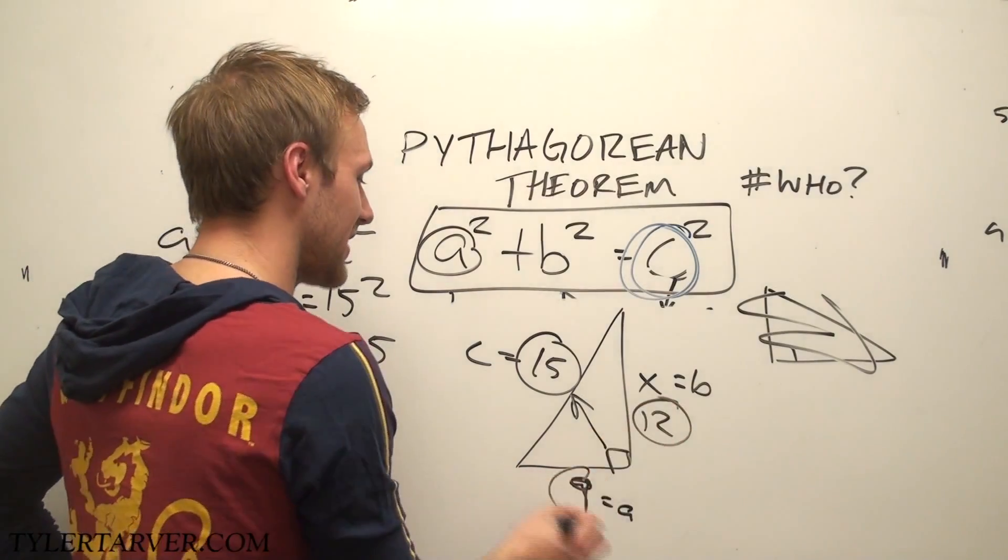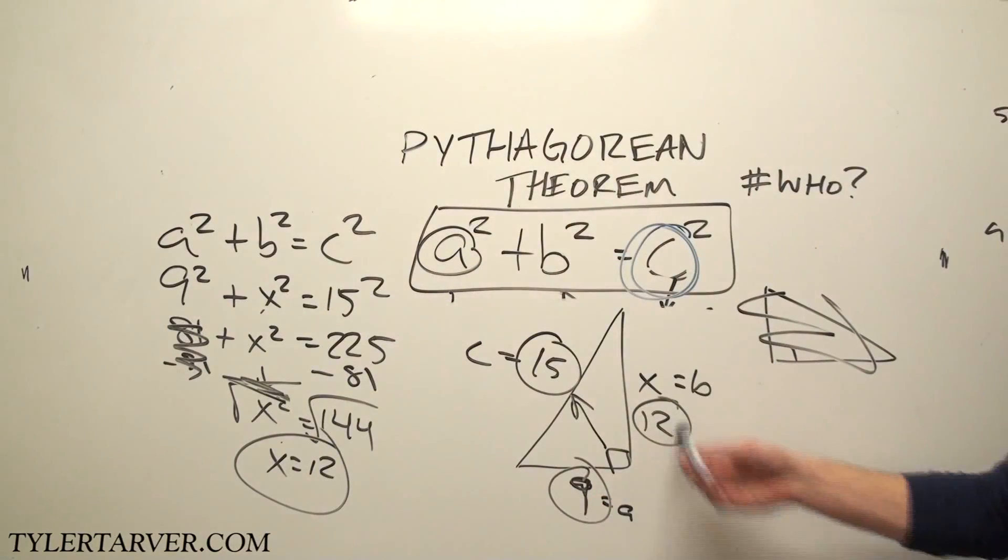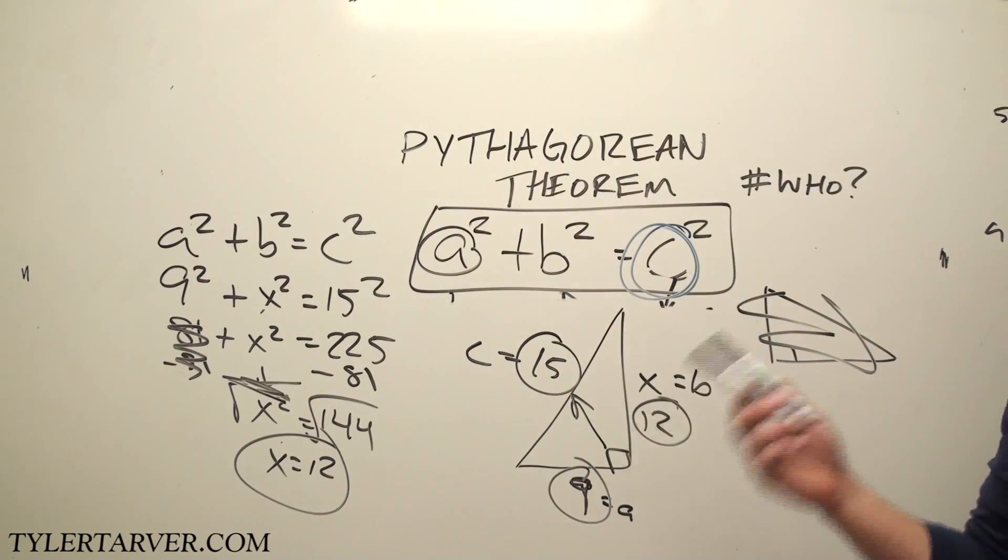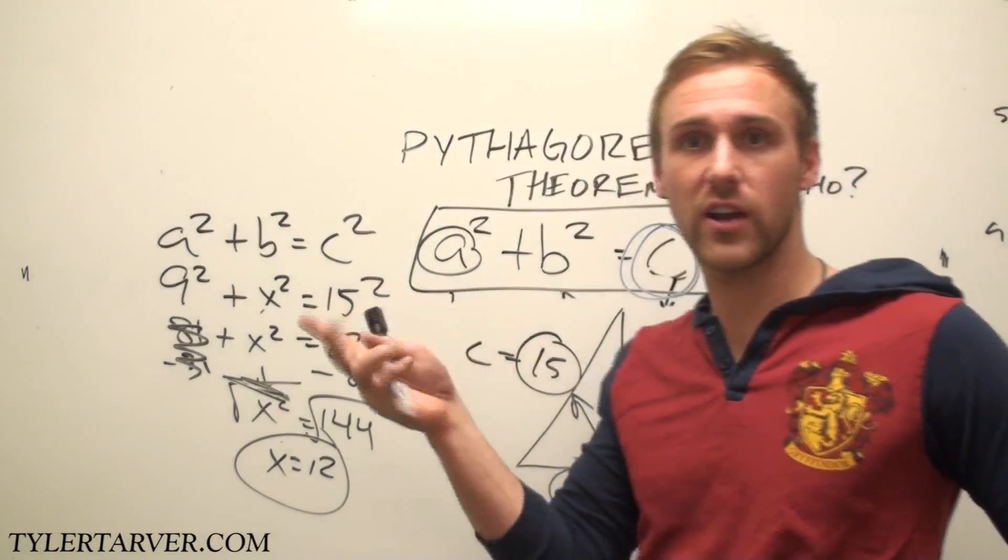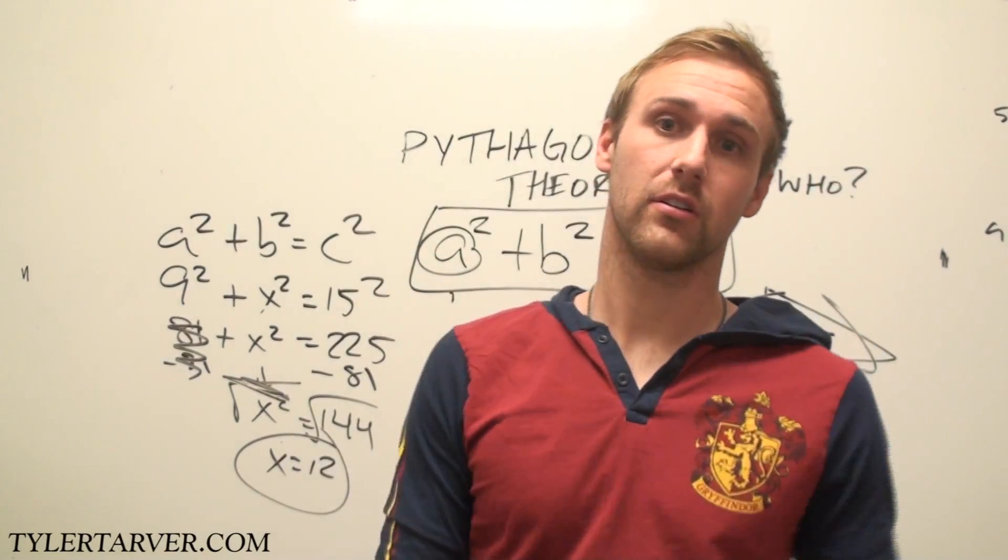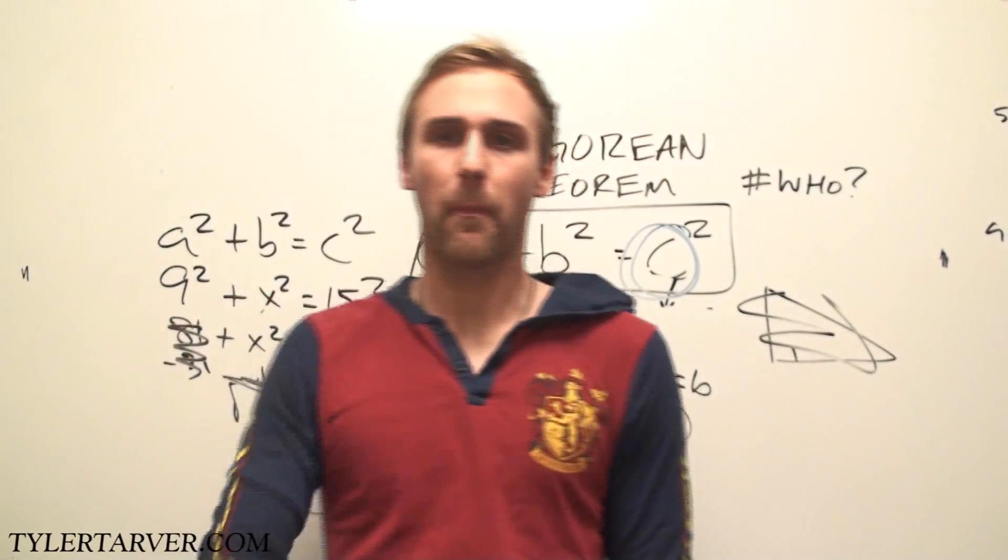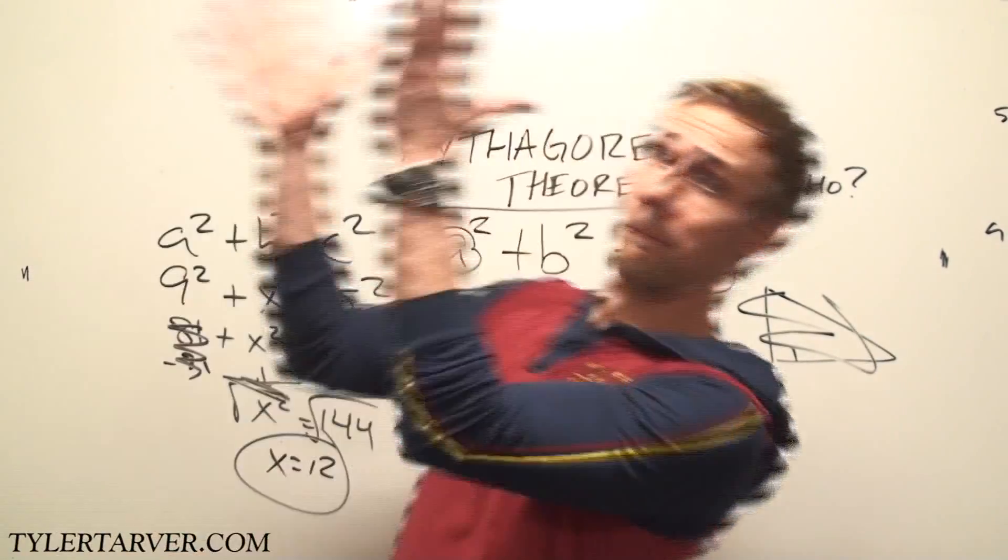Now does 12 make sense? Ask yourself, does 12 make sense right there? 9, 12, and the hypotenuse is 15. Is the hypotenuse the longest? Check. Are they all kind of around the same ballpark? Check. Is that the answer? Check. You're just learning some math. Pythagorean theorem. Bye.